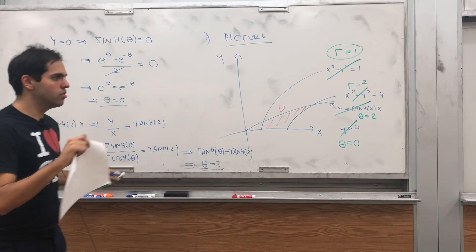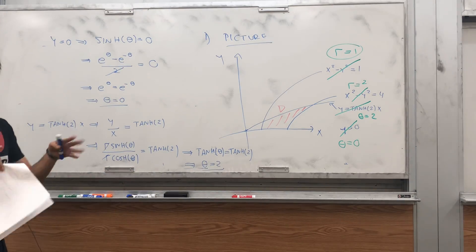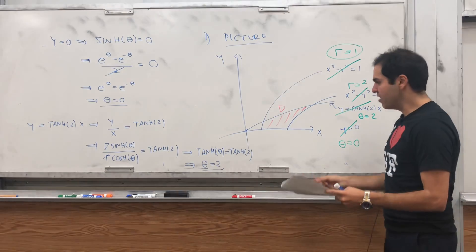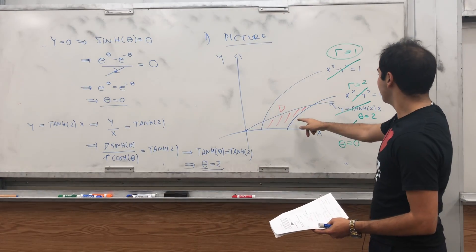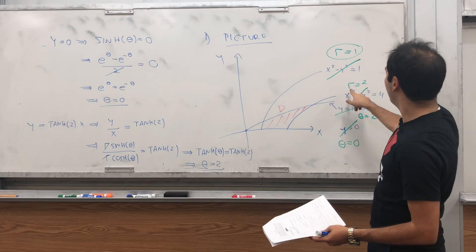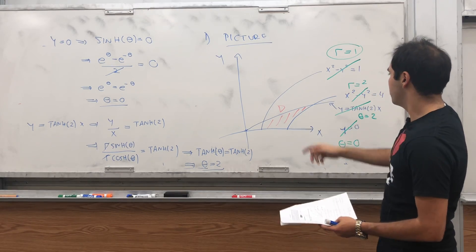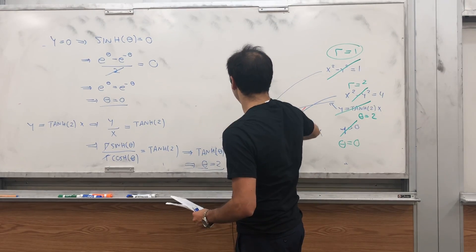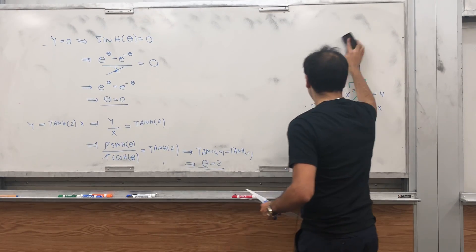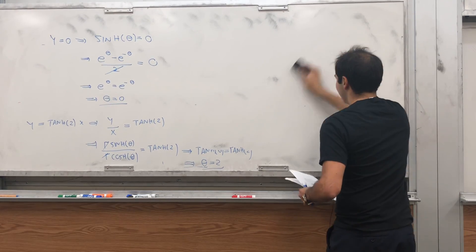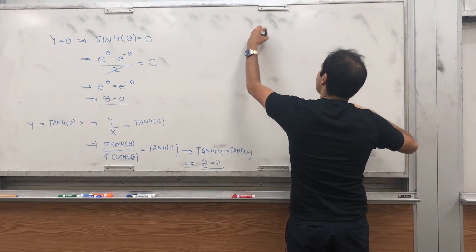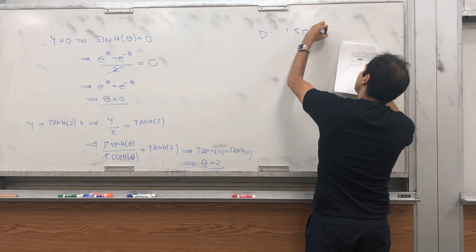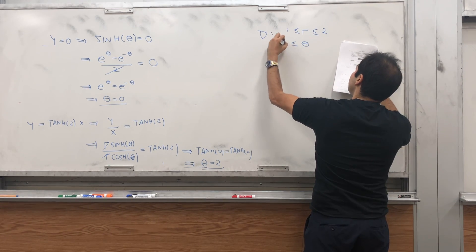So, it's interesting. It's just like for polar coordinates, theta equals to something becomes a line. Same thing here. And in particular, what is d? It's just the region r between 1 and 2 and theta between 0 and 2. So, now we don't need our picture anymore, but it's still very neat. d is so r between 1 and 2 and theta between 0 and 2.